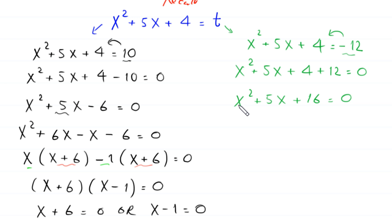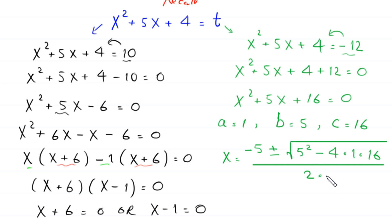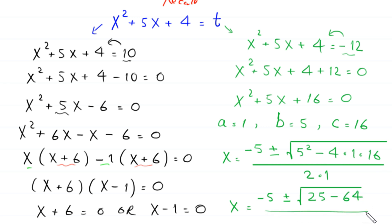This quadratic equation is not factorable, so we solve it using the quadratic formula. Here a = 1, b = 5, and c = 16. So x = (−b ± √(b²−4ac)) / 2a = (−5 ± √(25 − 4×1×16)) / 2 = (−5 ± √(25−64)) / 2.